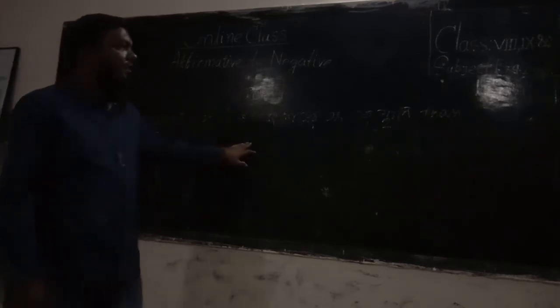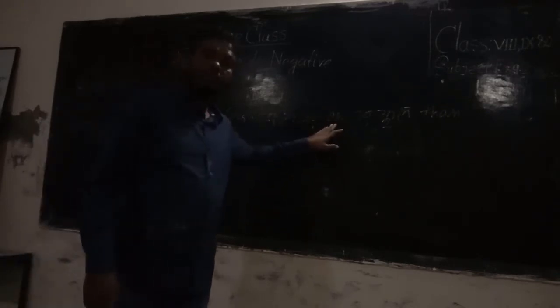Rule number ten. If we find 'as...as' in a sentence, we have to replace the first 'as' with 'not less' and the second 'as' with 'than.' For example: 'Rahim is as wise as Holi.' The answer will be: 'Rahim is not less wise than Holi.'